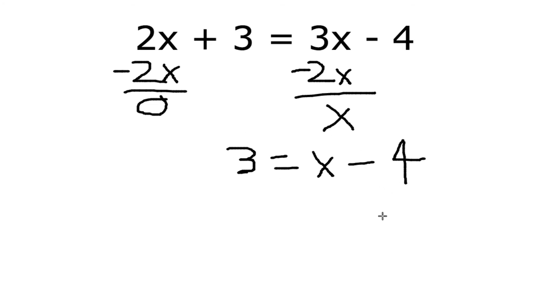So to get rid of that negative 4, we're going to plus 4 to both sides. Plus 4 cancels out this 4 on the right. Add 4 to the left side of the equation.